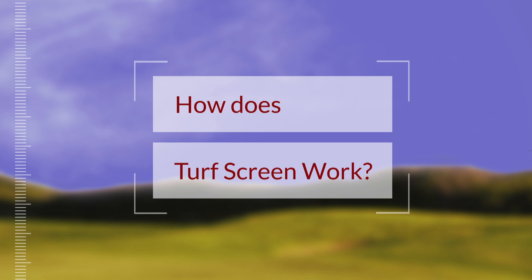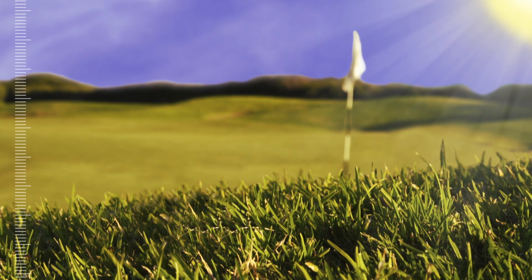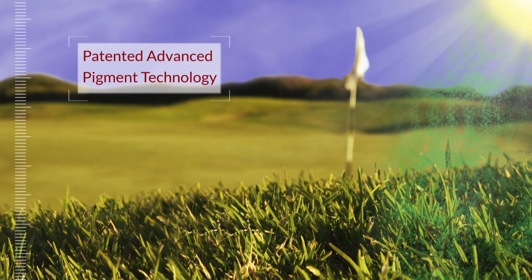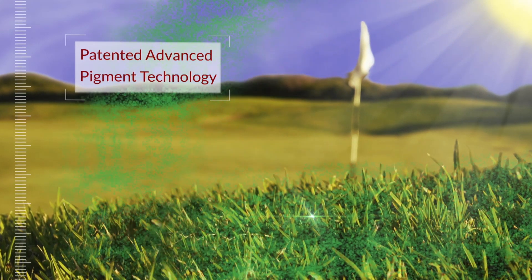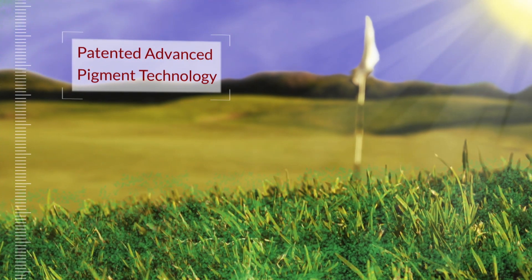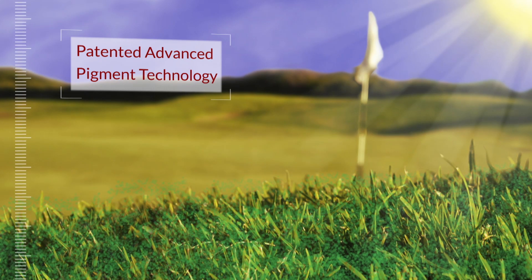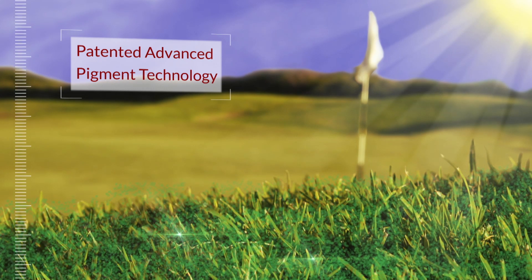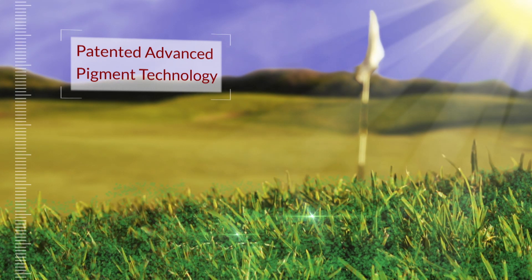So how does TurfScreen work? TurfScreen, formulated with patented advanced pigment technology, delivers the precise blend of titanium dioxide and zinc oxide to effectively reflect, absorb, and filter solar radiation.